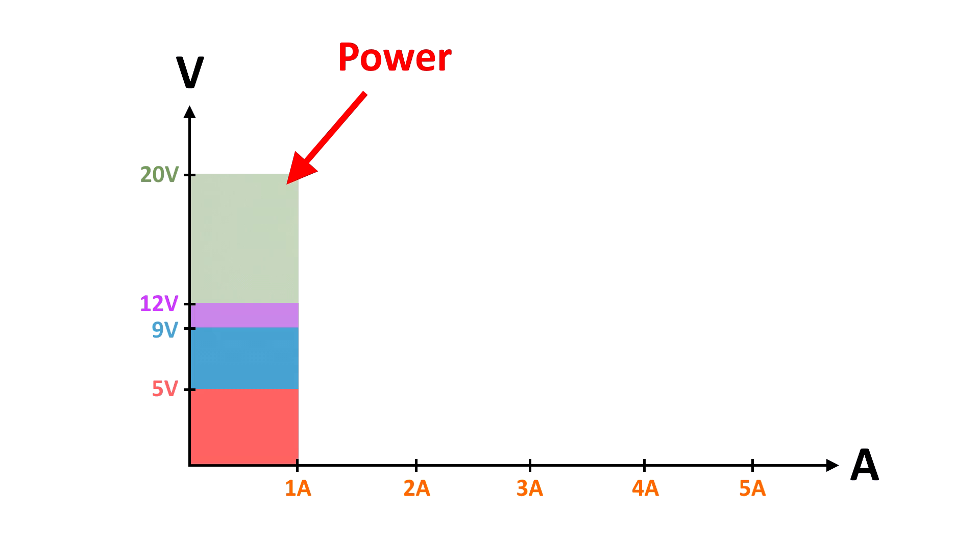Now you can see here that 5 volts at 1 amp, which is typical for USB 3.0, that's going to give you that red square. But what if we increase the voltage to 9 volts? We don't have to increase the diameter of the wires. All we have to do is increase the voltage that's being supplied. Well, if we do that, then we have almost twice as much power being provided to charge our battery.